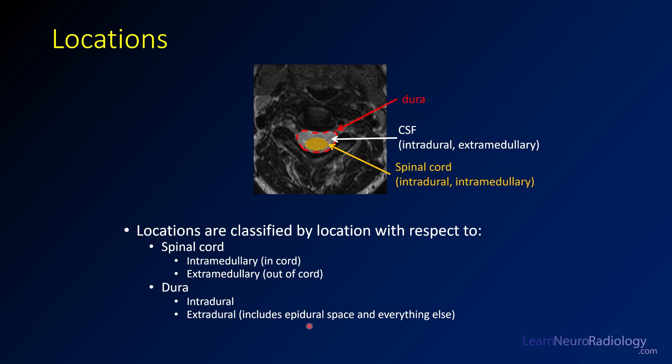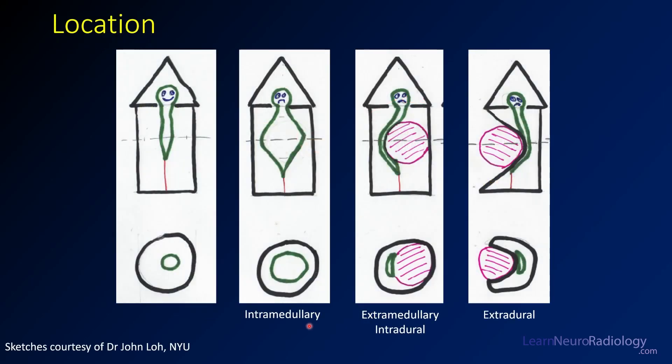The CSF is by definition intradural and extramedullary. These are the key spaces and how to think about lesions as you move forward. The neural foramina, the bones, and everything else in the body are extradural.